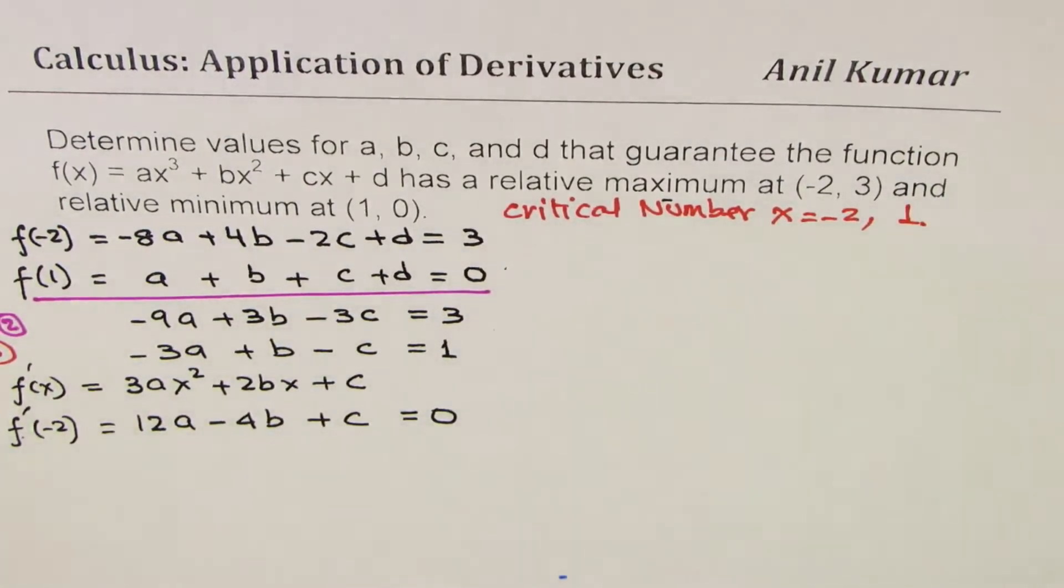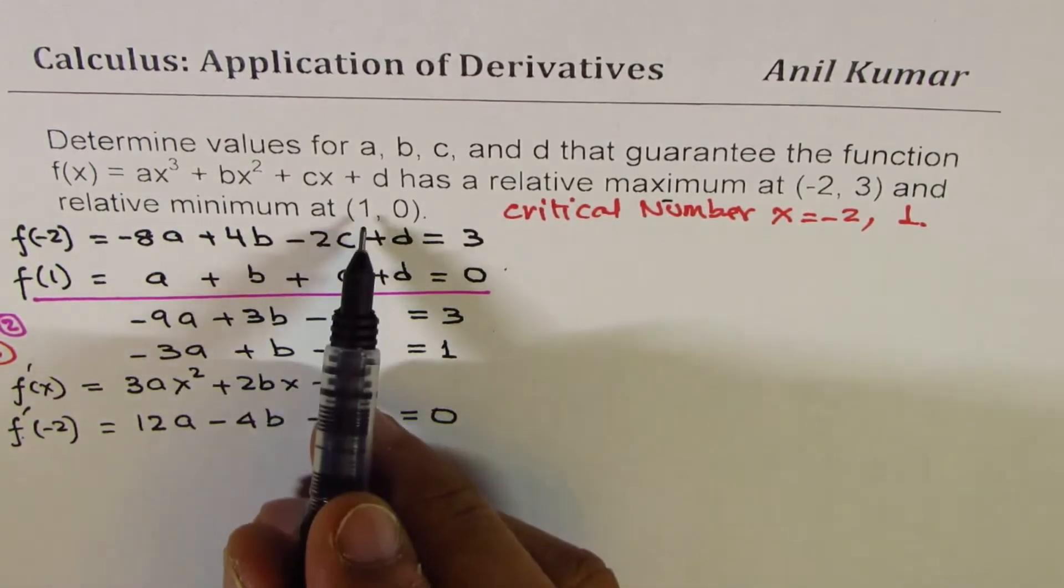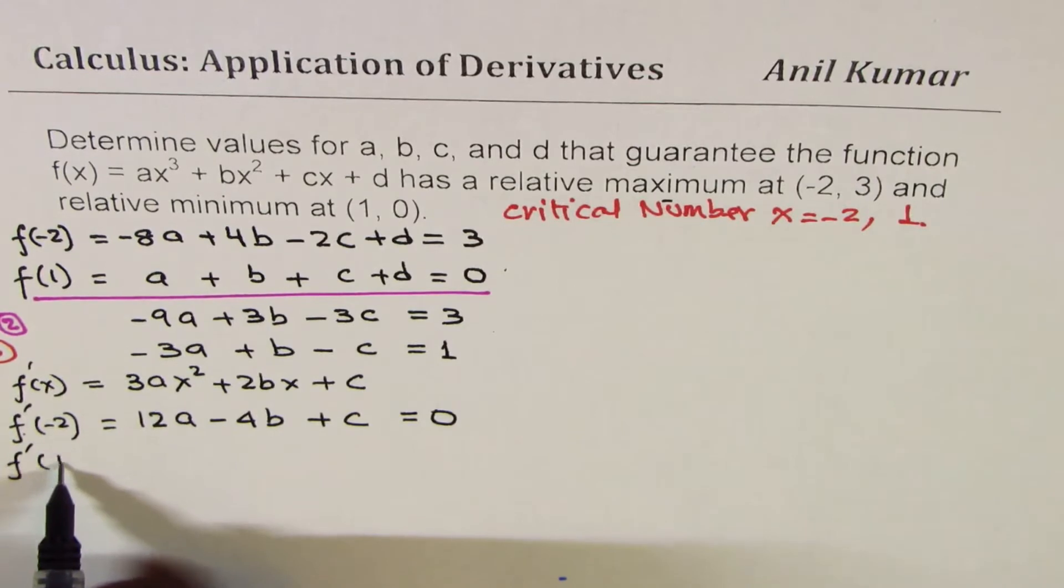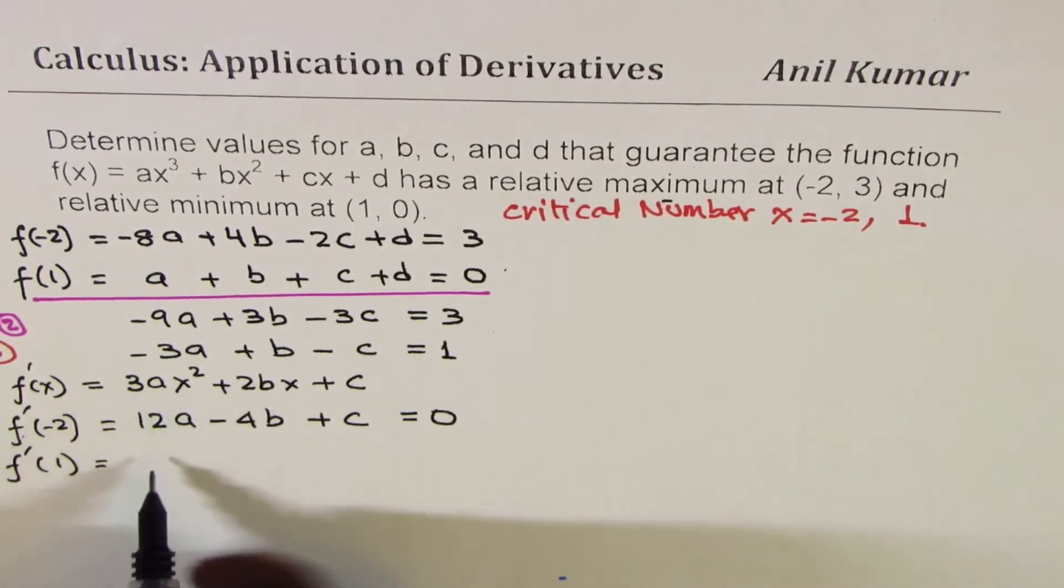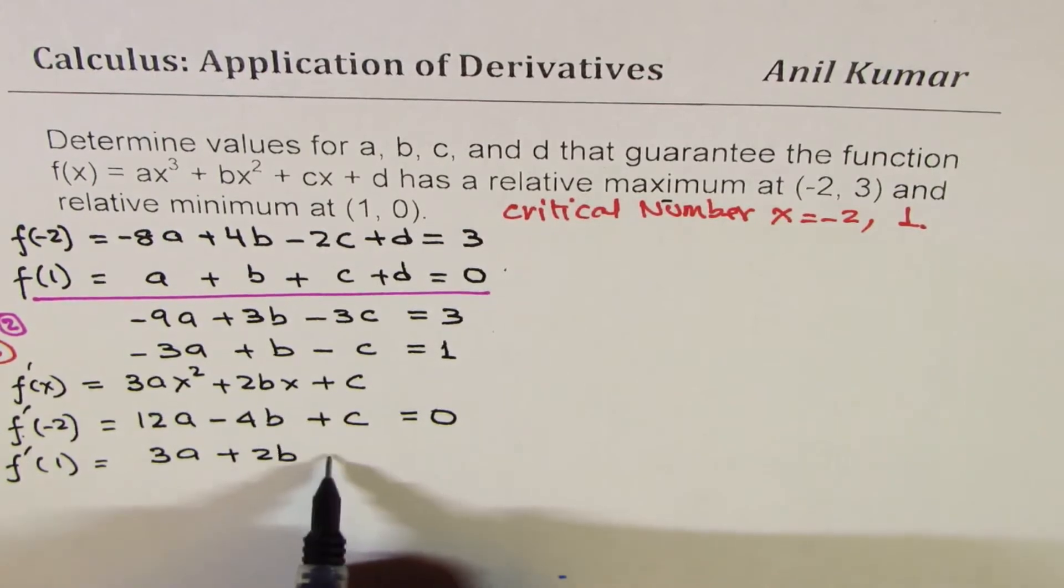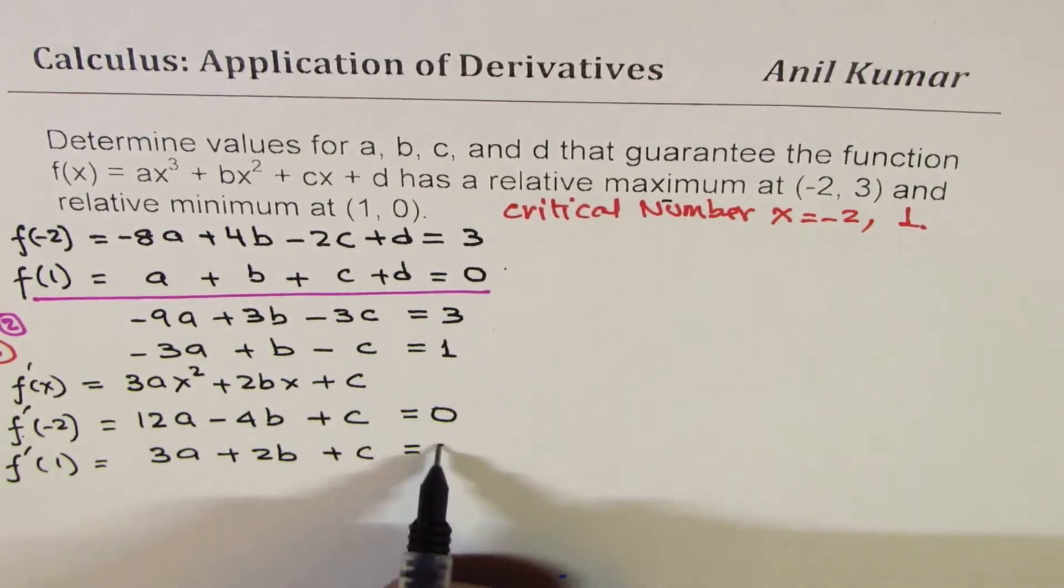x = -2 and also at 1. So we get one more equation. If I substitute 1, then also that derivative should be equal to 0. Substituting 1, we get 3a + 2b + c = 0.